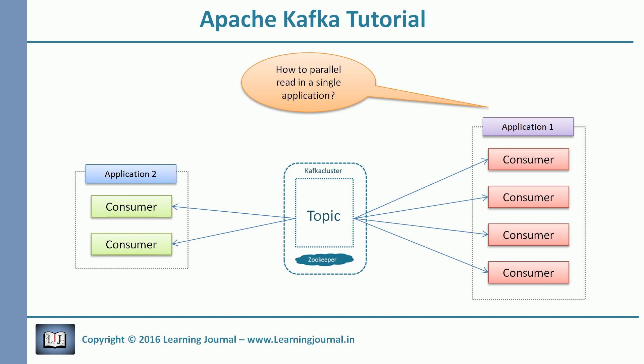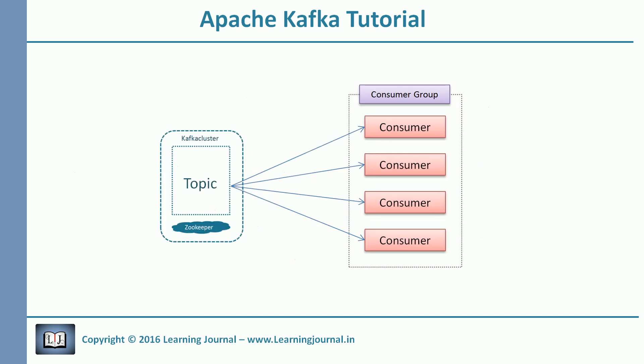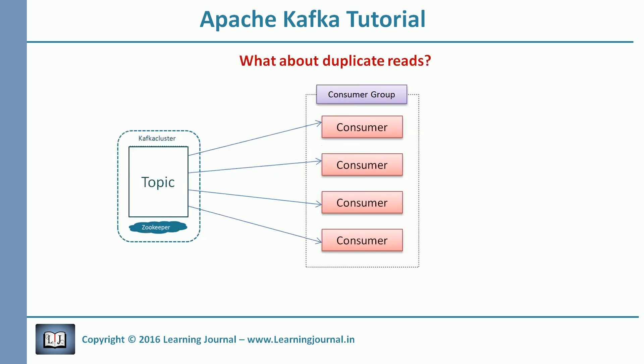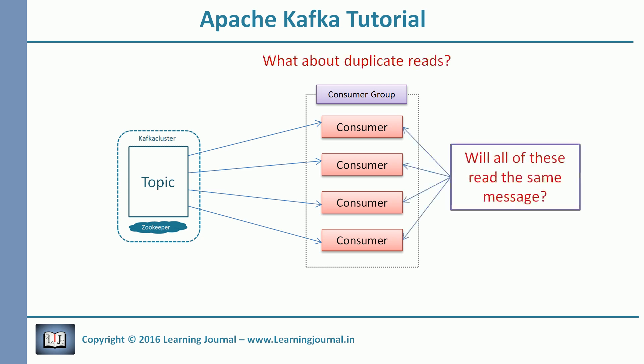I think you already know the answer. We can do that by creating a group and starting many consumers in the same group. That part is simple — we will see some code examples for creating multiple consumers in the same group. However, there is a concern about duplicate records. If we have multiple consumers reading data in parallel from the same topic, don't you think that all of them can read the same message?